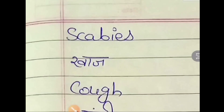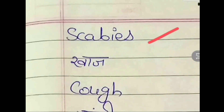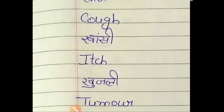Hello students, there are some common ailments and body conditions. Let's learn their names in English. Kaj — Scabies. S-C-A-B-I-E-S. Kaj, Scabies.